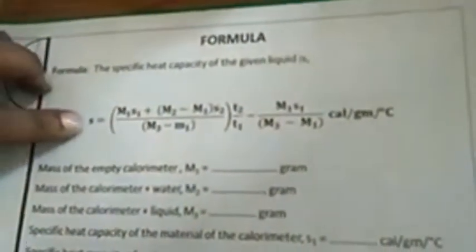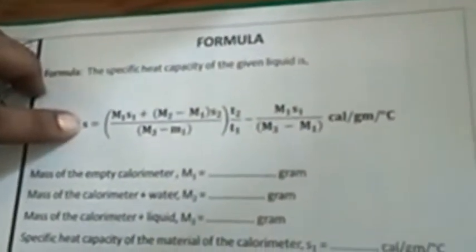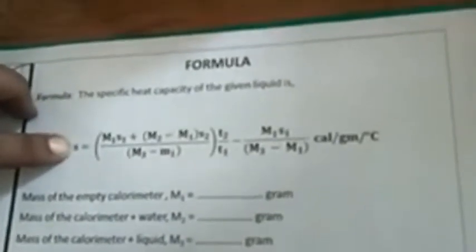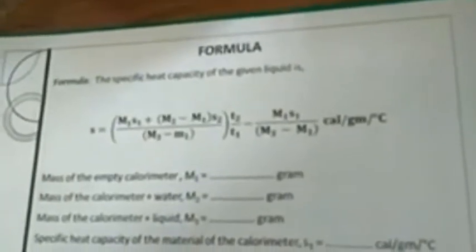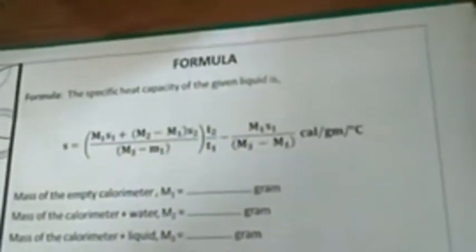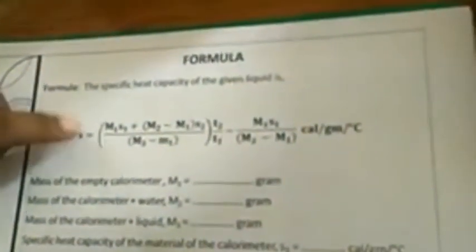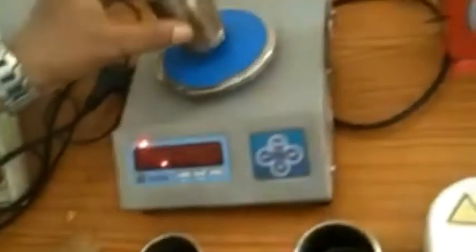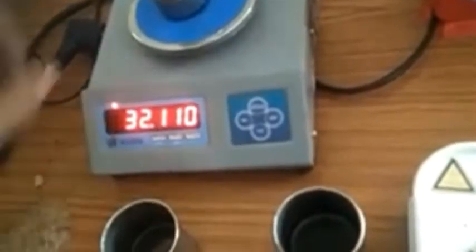Here, the specific heat capacity of the unknown liquid — that is oil or glycerin — is measured based on the specific heat capacity of a known liquid. The known liquid we are considering is water. We know the specific heat of water, that is S2, is equal to 1 calorie per gram per degree centigrade. In the formula, M1 is the mass of the empty calorimeter in grams. The mass of the empty calorimeter can be measured using this weighing machine. I can observe it to be 32.11 grams.